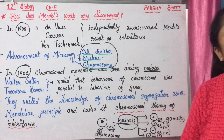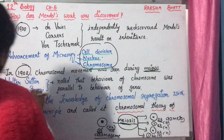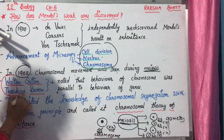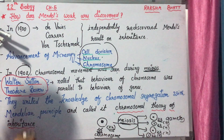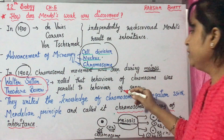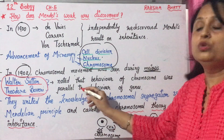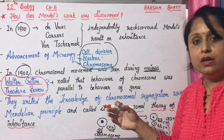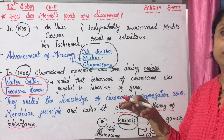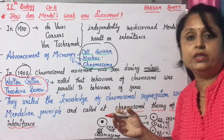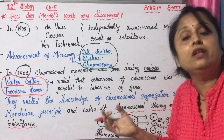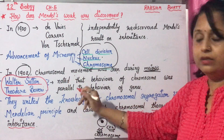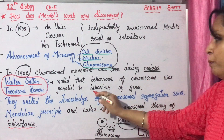Most importantly — this is a very important question for exams: Walter Sutton and Theodore Boveri. This has been asked many times. Walter Sutton and Theodore Boveri noted that the behavior of chromosomes was parallel to the behavior of genes. The chromosome knowledge and Mendel's experimental knowledge — these two were fused together by them.